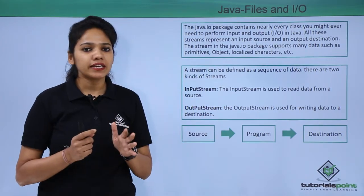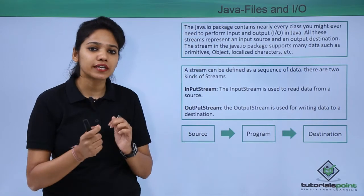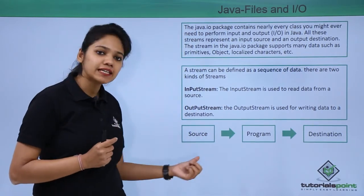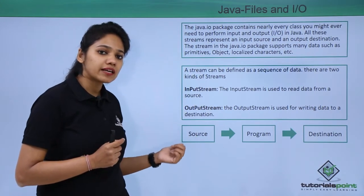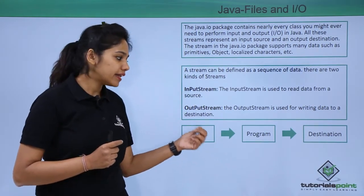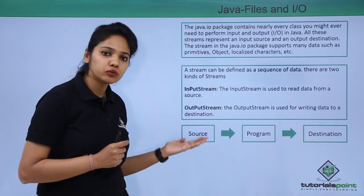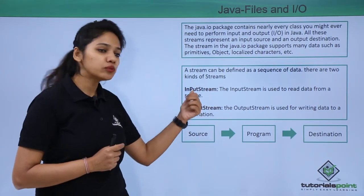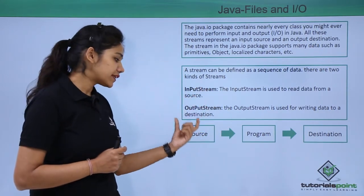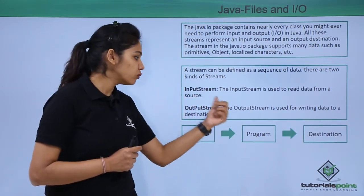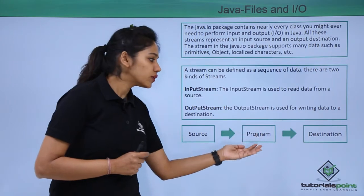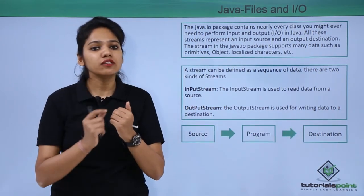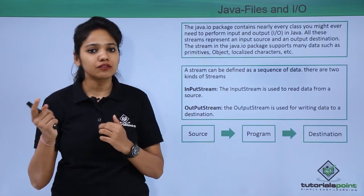The program then writes the data to the destination file with the help of an output stream. This data may be of any kind — for example, textual data like 'Welcome to Tutorials Point.' You have a .txt file created with that data, and using the input stream class you pull the data from your source file, then use the output stream class to write the data to your destination.